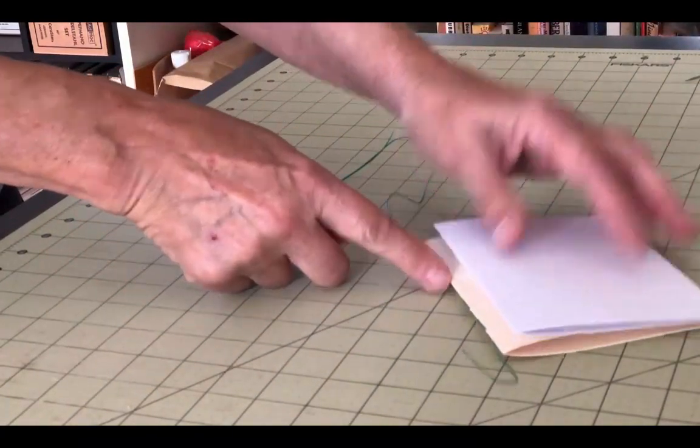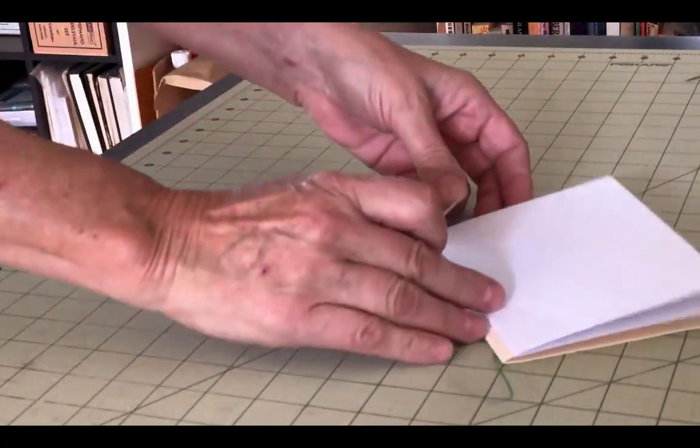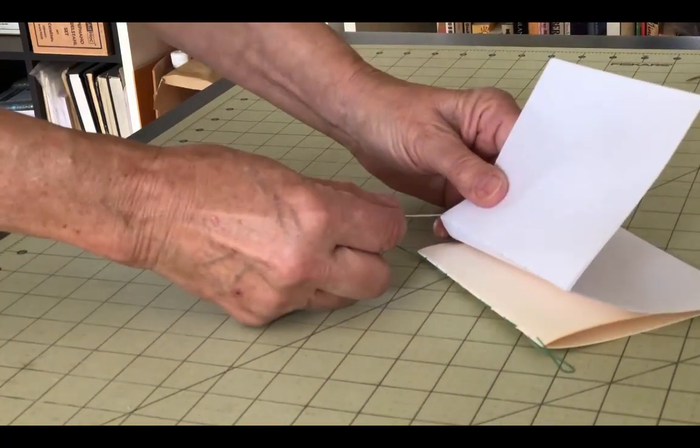Sew into the next signature, making sure that you keep the correct orientation of each signature, and sew out through the next hole.